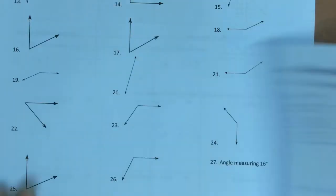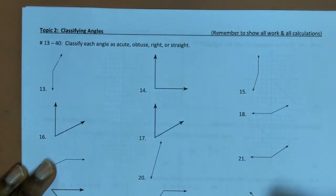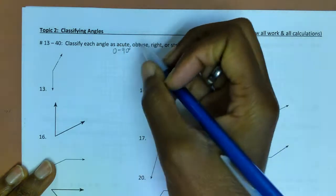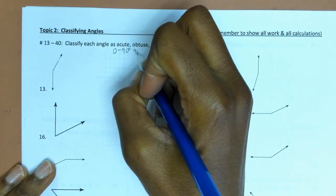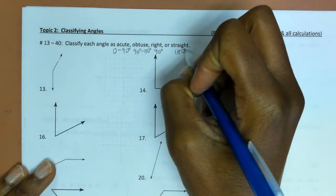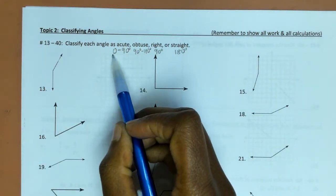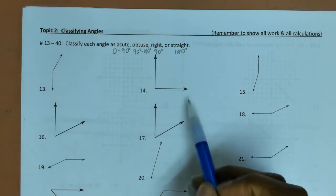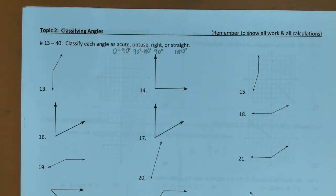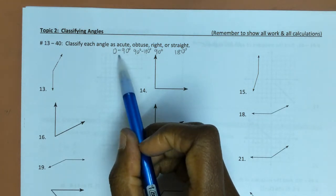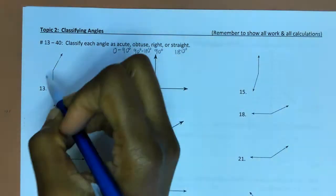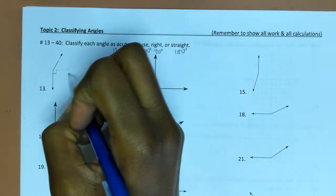Moving on to classifying angles. To classify each angle as acute, obtuse, right, or straight, you look at the measure: between 0 and 90 degrees is acute; between 90 and 180 degrees is obtuse; exactly 90 is right; and exactly 180 is straight. You can't have an angle of exactly 0 because the two rays would be overlapping with no space between them.